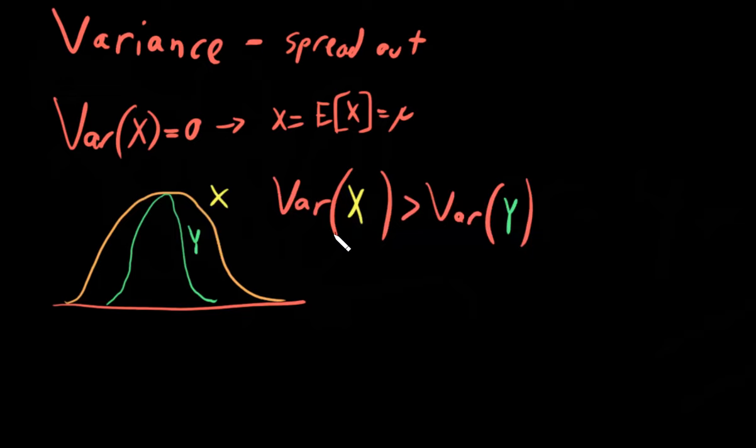Variance can vary, no pun intended, between zero, very uninteresting, to infinite. It's just a mathematical number that represents how spread out the data is.